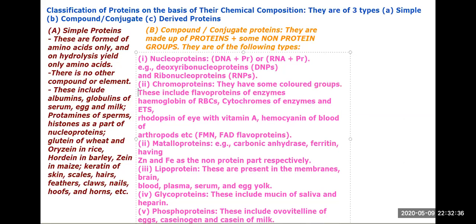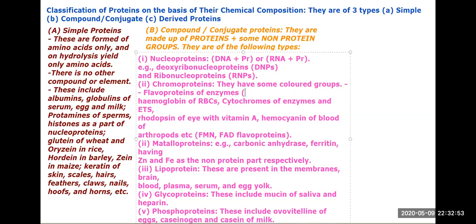The second compound type is chromoproteins. These have some colored groups. An example is flavoproteins of enzymes. Flavoproteins contain flavin, which is yellow in color.